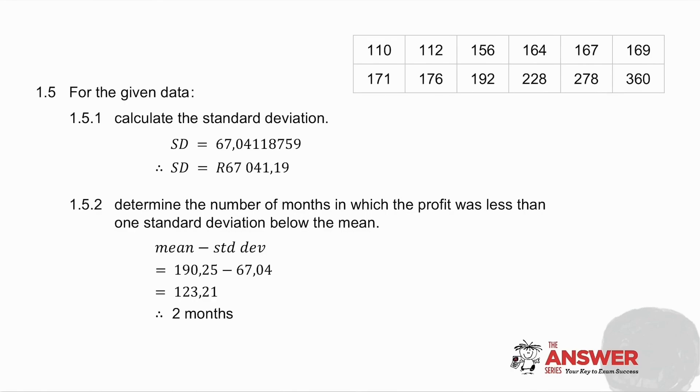1.5 says calculate the standard deviation. 1.5 asks you to determine the number of months in which the profit was less than one standard deviation below the mean. So I take the mean, which you've calculated, minus the standard deviation, which you also have, and I get my answer. Where does that fit into my data? It fits between these two values. So how many entries do I have less than that? I have two.